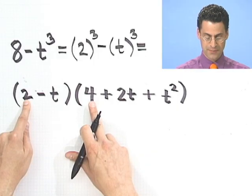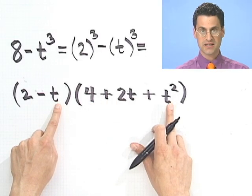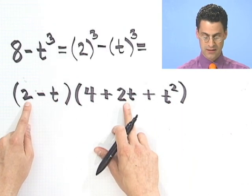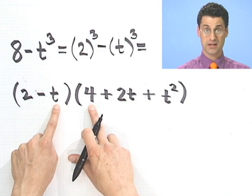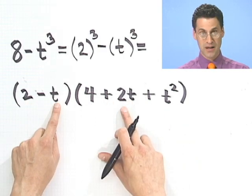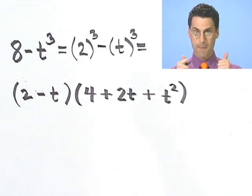You might want to check this. To be honest, I always like to check this myself because I'm so bad at arithmetic. This is an 8, this gives me the minus t cubed. Everything else should cancel. Here I see a 4t, but then happily here I see a minus 4t. Here I see a plus t squared, but happily here I see a minus t squared. Everything cancels out. Great.